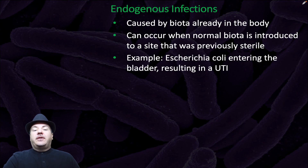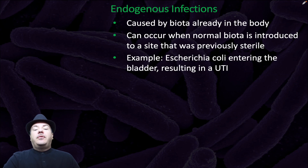Endogenous infections are caused by biota already in the body. They can occur when normal biota is introduced to a site that was previously sterile. For example, E. coli entering the bladder, resulting in a UTI.